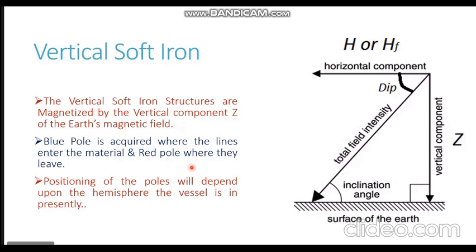Now let's assume this same ship starts moving, crosses the equator, goes into the southern hemisphere, and reaches the south pole. At the south pole, the magnetic lines of force come out of the earth's surface. When they come out they enter the mast from the bottom — giving it a blue polarity — so the bottom of the mast now acquires a blue polarity. These lines of force leave from the top of the mast, giving it a red polarity. So as the ship moves between hemispheres, the poles of the VSI can reverse.